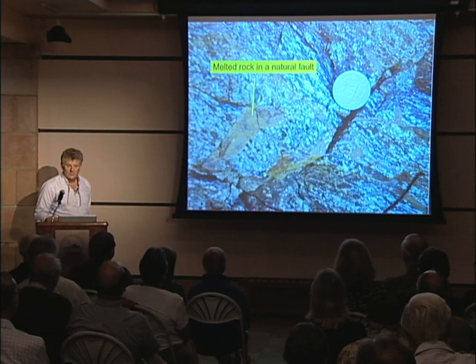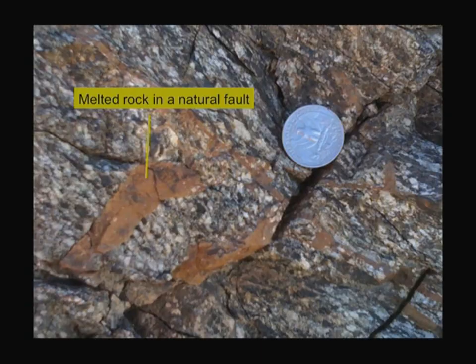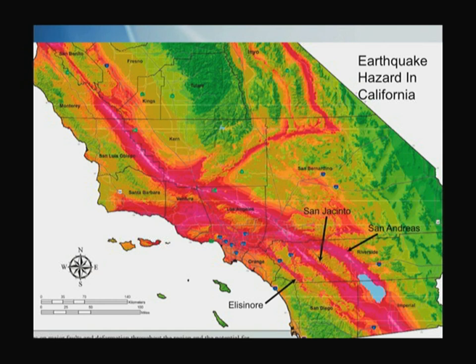In natural systems we certainly do see melted rock — called pseudotachylites. These are just out by Palm Springs. You can walk out to fault zones in Palm Springs where you can see thousands of pseudotachylites on some of the big shear zones out there. These are some of the kinds of things people do to look at the weakening processes and physics of earthquake fault zones.